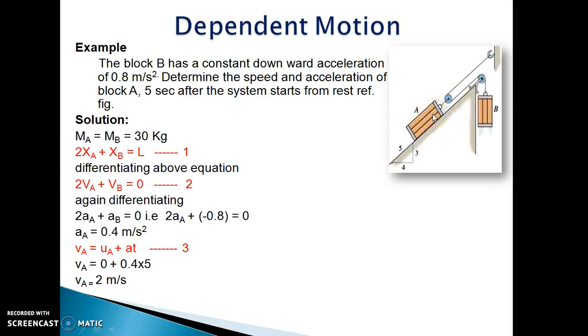So the movement of block A and B are dependent on each other. For example, if block A moves down, definitely block B will move up. Similarly, if block B moves down, block A will move up, and vice versa.